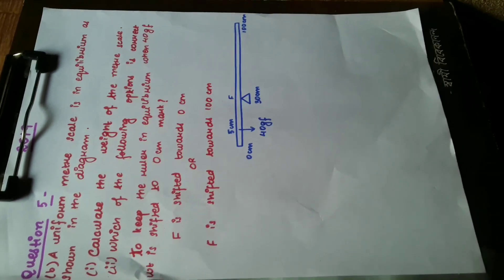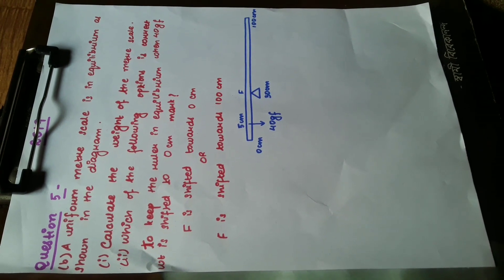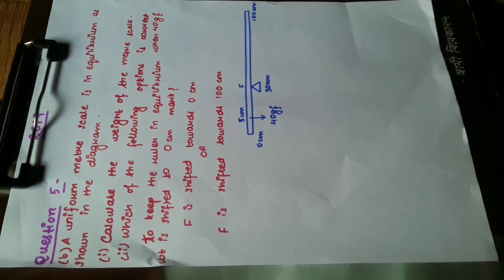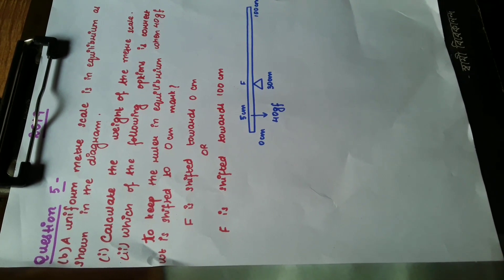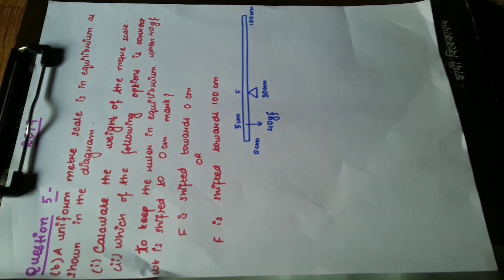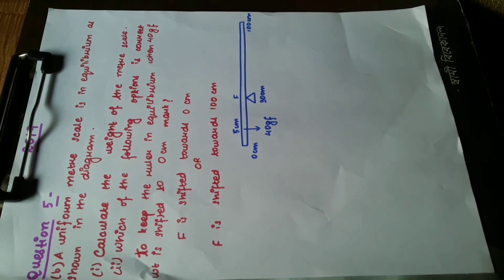The question is number 5B. Let's read the question first of all. A uniform meter scale is in equilibrium as shown in the diagram. Here we have a diagram given for simplicity. Calculate the weight of the meter scale and which of the following options is correct. We have a set of options over here.